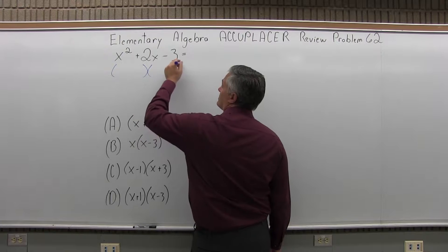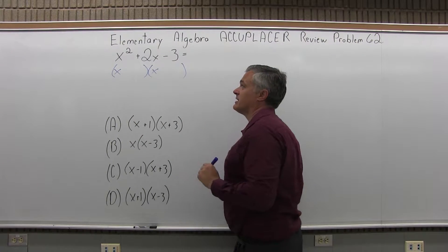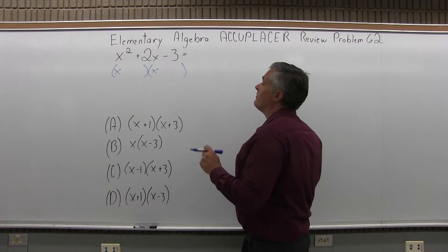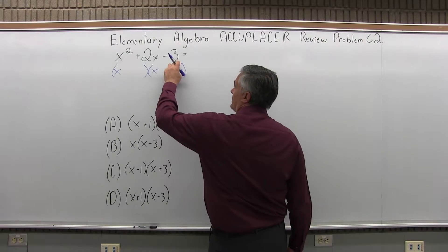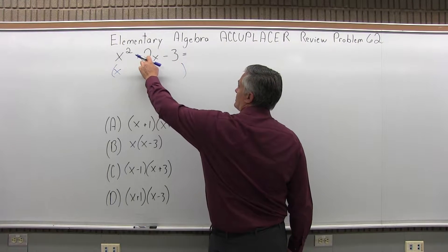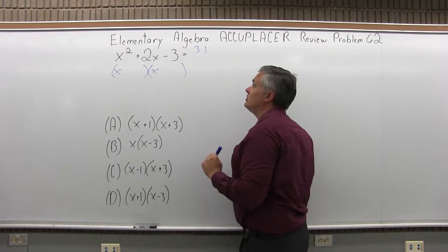So where it starts with an x squared, my parentheses will each start with an x. I'll start with x times x. Now, I want two numbers to multiply to give me a 3 and add or subtract together somehow to give me a 2.